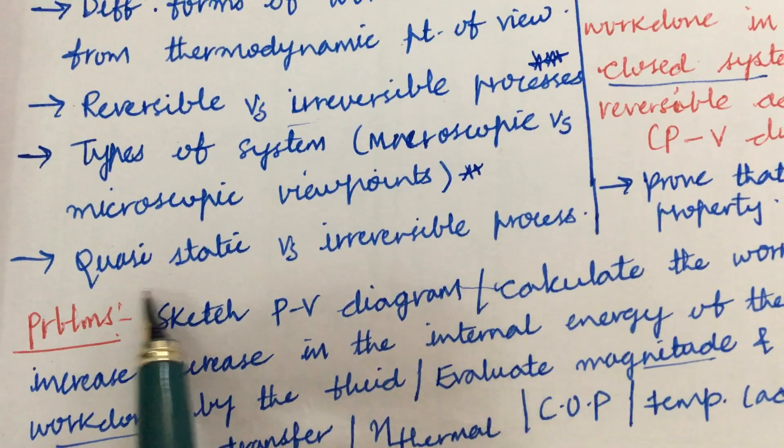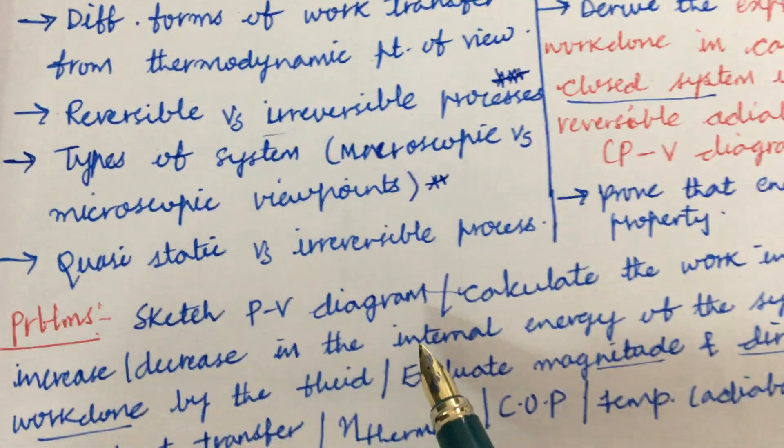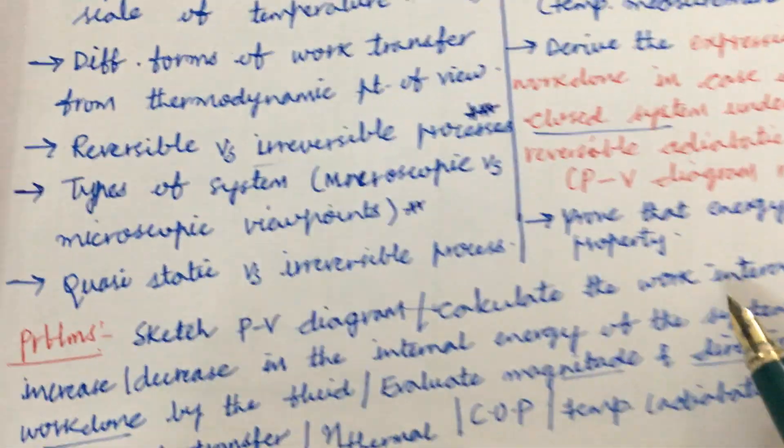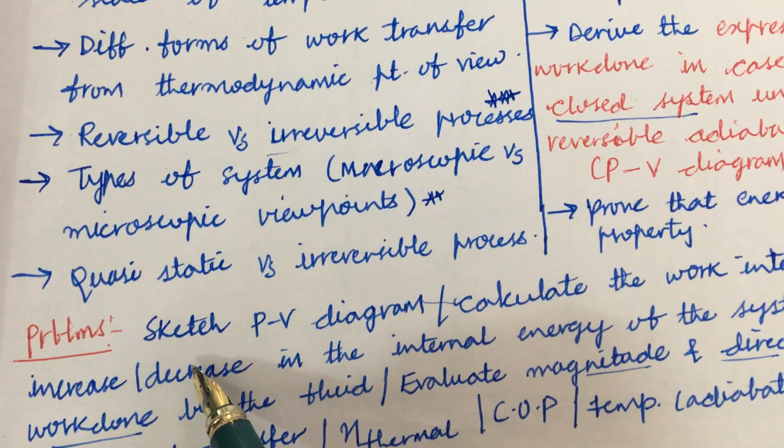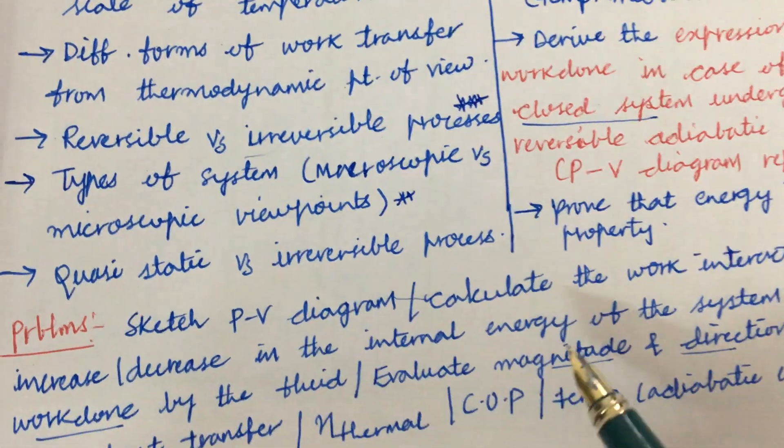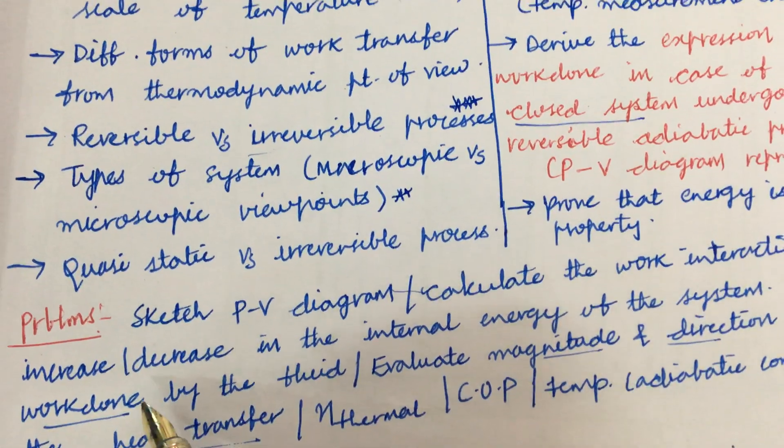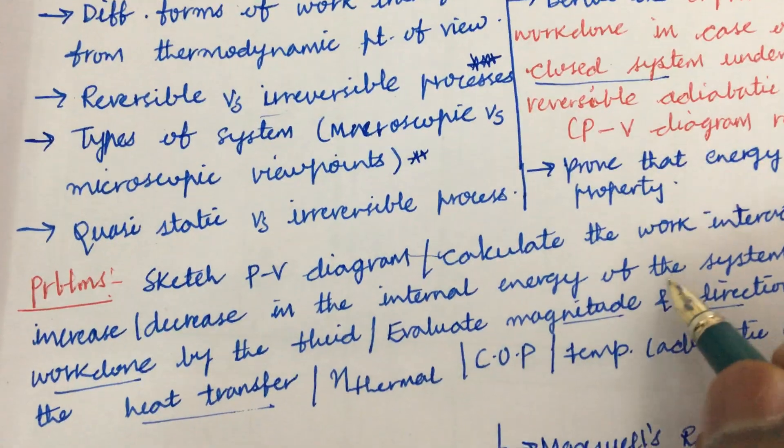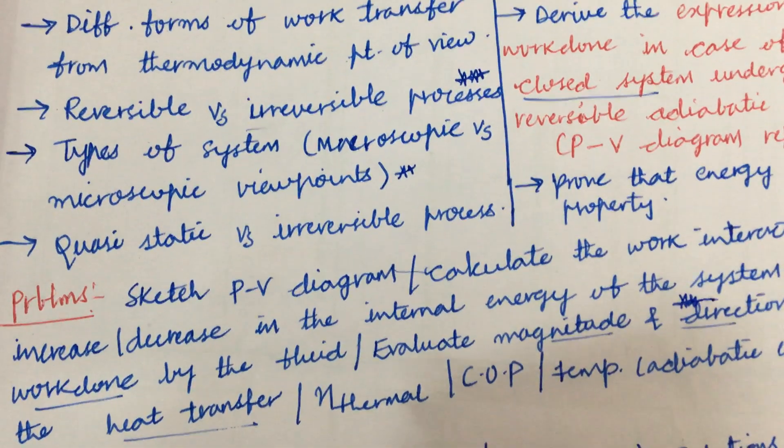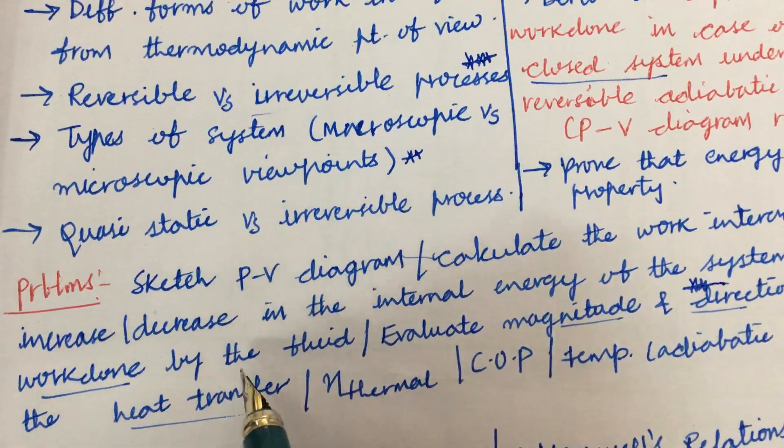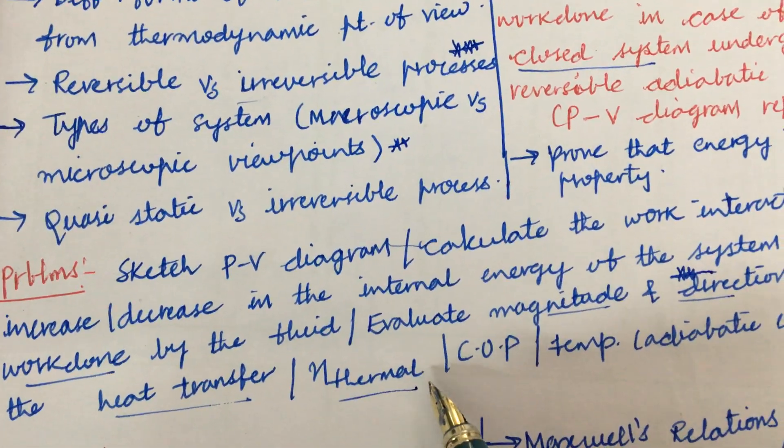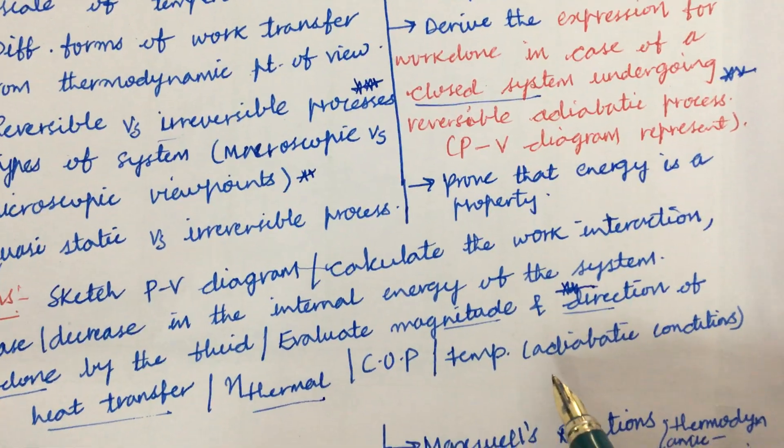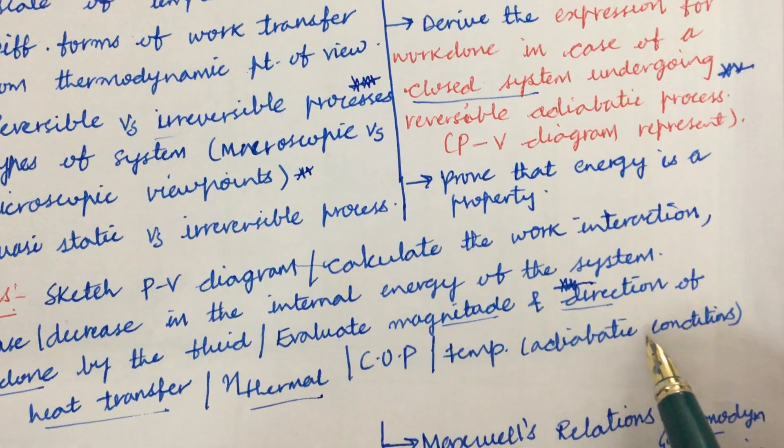Please do work out each and every point, studying the first unit first. And the problems are also highlighted: sketch PV diagram, they will be asking giving certain information related to the problem, and calculate the work interaction and increase or work out the increase and decrease in the internal energy of a system, work done by the fluid, evaluate magnitude and direction of the heat transfer. Related to this, a problem is very important, a gunshot question, and the work done also very important, and work out thermal efficiency, coefficient of performance, and the temperature in the process of adiabatic conditions.